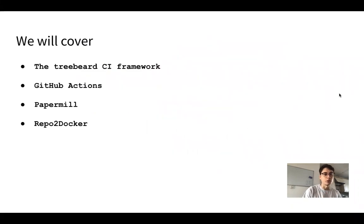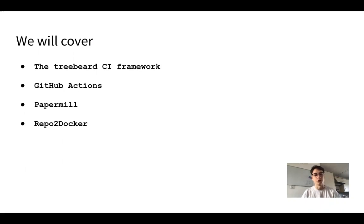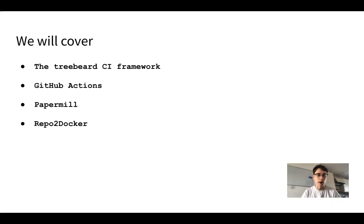Just before jumping into this, I want to get us up to the same level on what continuous integration is. The problem it's solving is ensuring that every time a change is contributed to a project you're working on, in response to that change, you get some automation, you get feedback on if the change works, and you get integration with your production workflow. So if you're automating a task, every time code is contributed, that new code is used for the next time the task is run.